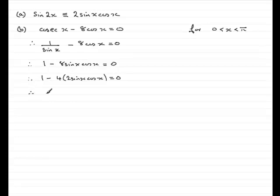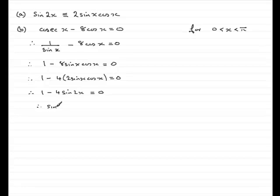So we have 1 minus 4sin(2x) equals 0. If I rearrange this — add 4sin(2x) to both sides and then divide by 4 — what we end up with is sin(2x) equals 1/4.